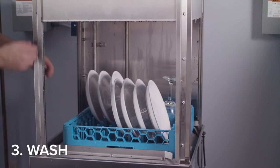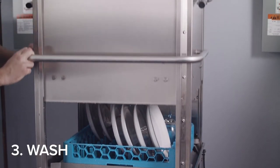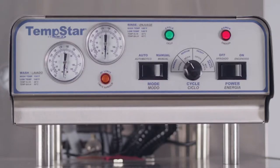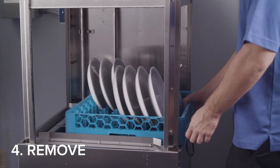Slide the rack into the ware washer and close the door. The cycle will begin automatically. When the cycle light turns off, remove the rack of clean dishware.